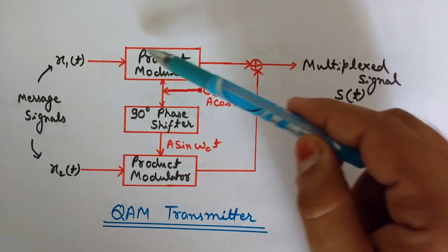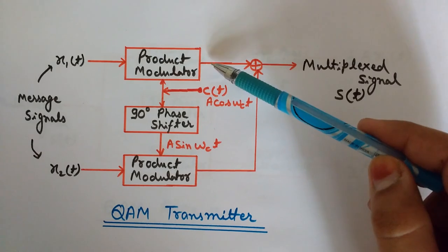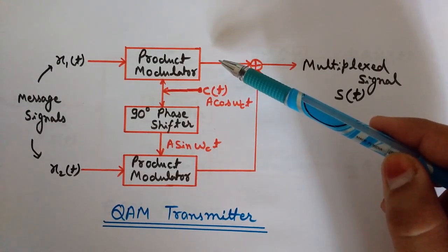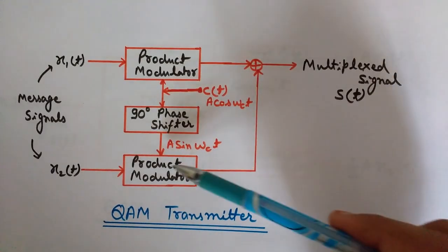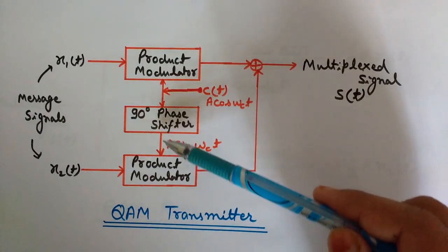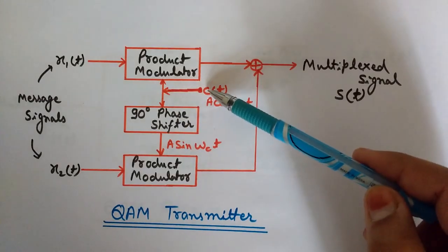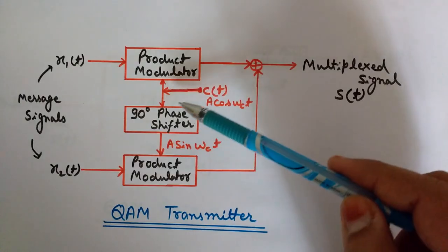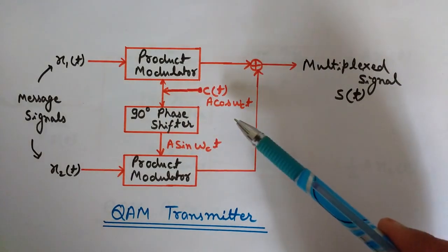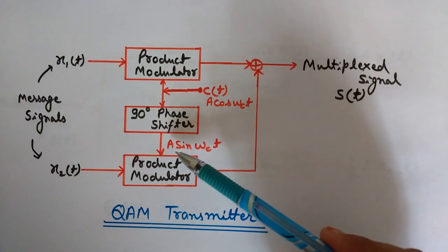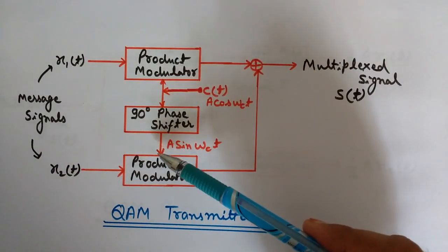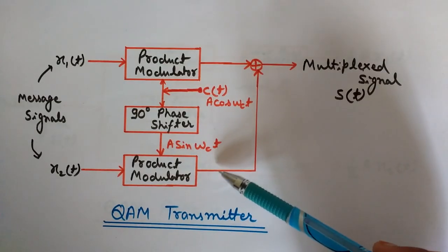When the modulating signal and carrier wave are applied to the product modulator, the output gives us Double Sideband Suppressed Carrier (DSBSC) output, which is a form of amplitude modulation. For the second product modulator, the carrier wave is first phase shifted by 90 degrees in the 90-degree phase shifter, giving output A·sin(ωc·T) — since shifting a cosine by 90° yields a sine wave. The output is again an amplitude modulated wave.